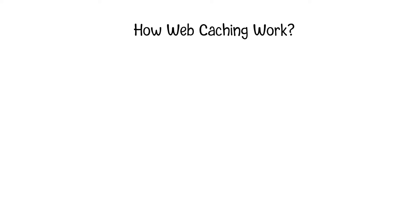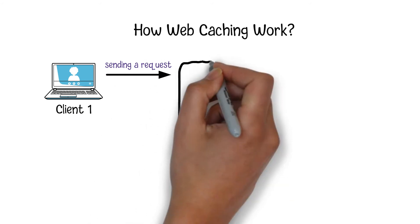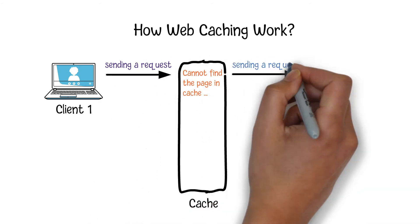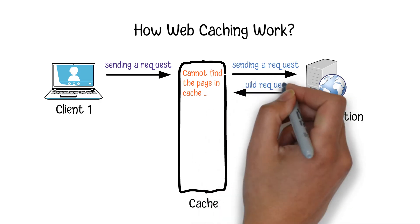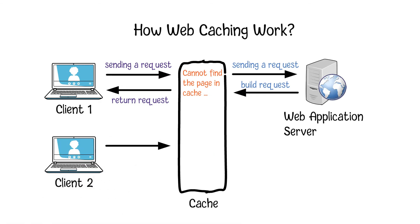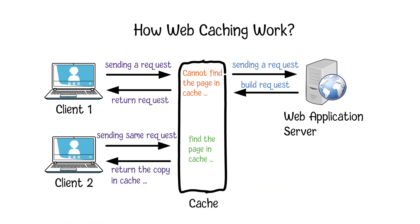This chart can illustrate how the cache works. When the first user sends a request, the result cannot be found in the cache, so the request will be forwarded to the application server to build the response. That response will leave a copy in the cache. When the second user sends the same request, the system identifies that there is already a copy in the cache, so it returns that copy immediately without sending further requests to the application server. The third user's request will be handled the same way, and they will get the copy in the cache.